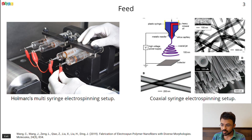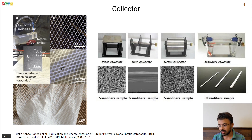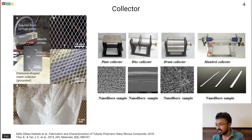There are basically four types of collectors: the plate collector, disc collector, drum collector, and bundle collector. We get almost similar fiber mat from the plate collector and drum collector; the only difference is that the drum collector produces a continuous mat. In this type of collector we get a very similar or parallel orientation of the fibers. On the left is a special carbon mat produced using an aluminum mesh, which generates a diamond-shaped carbon fiber mat.